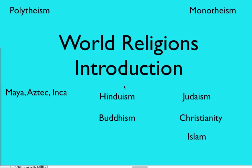Religions. We're going to be dealing with a number of topics and a couple of key terms. First, we're going to be dealing with the term polytheism, monotheism, and we're going to be dealing with several different topics: the Maya, Aztec, and Inca, and their religious practices.